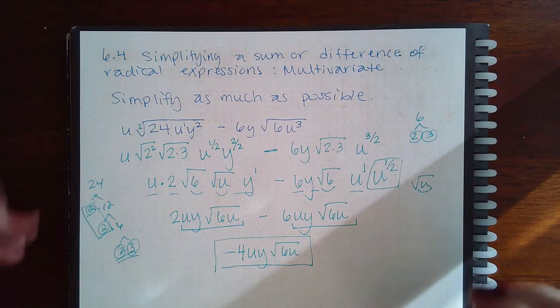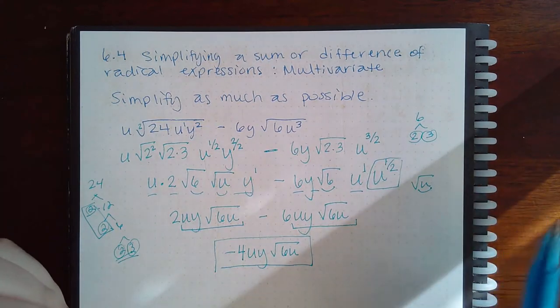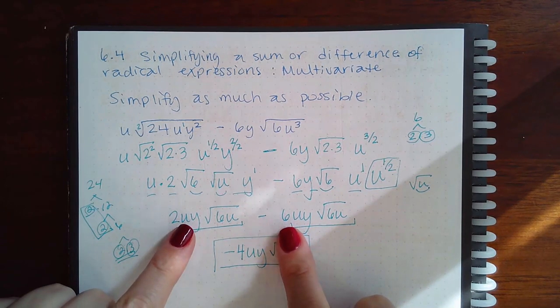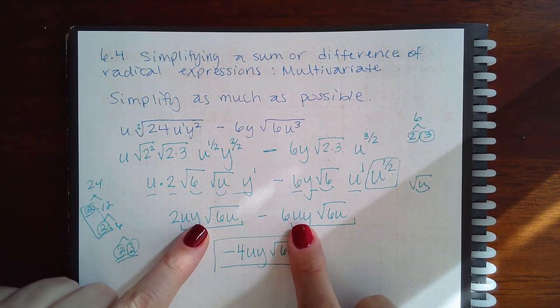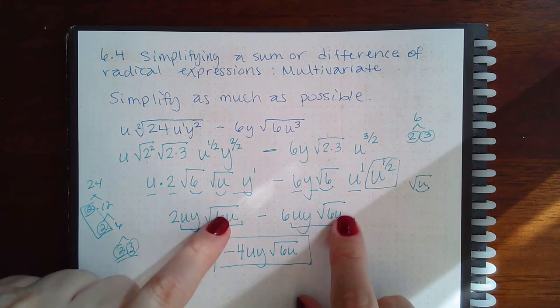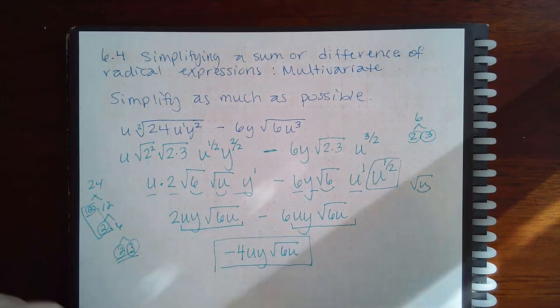So they get a little heavy as far as you're simplifying those radicals, but once you have those radicals simplified, if the exponents on all the variables outside the square root match and what's inside the square root matches completely, then you can combine those like terms.